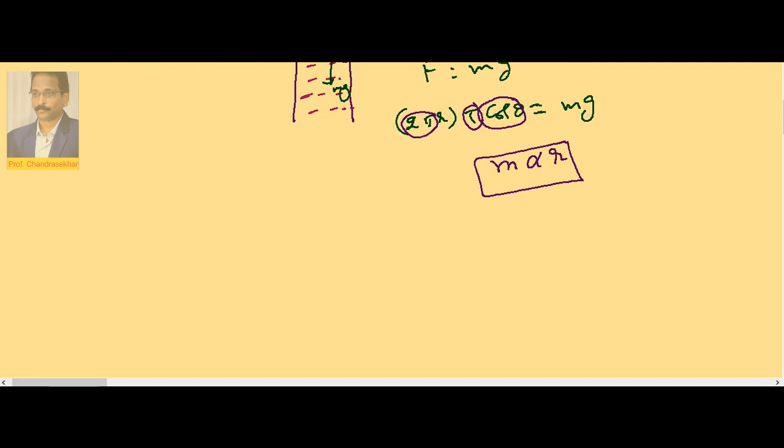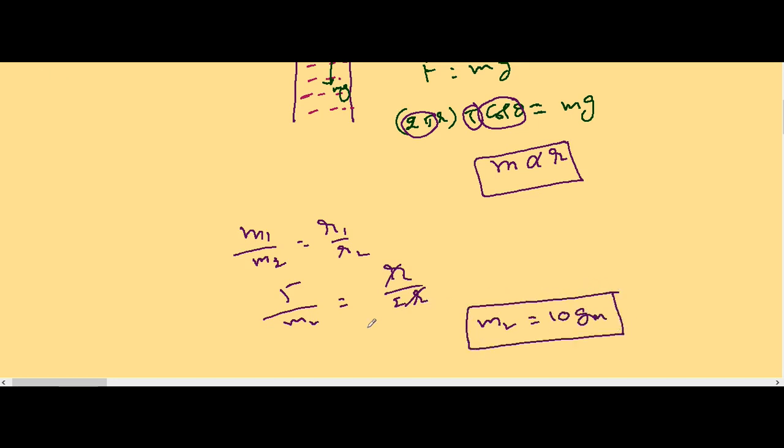So M1 by M2 is equal to R1 by R2. This is 5 divided by M2 equals R by 2R. So M2 is equal to 10 grams. So 10 grams is the mass of the water in the capillary tube.